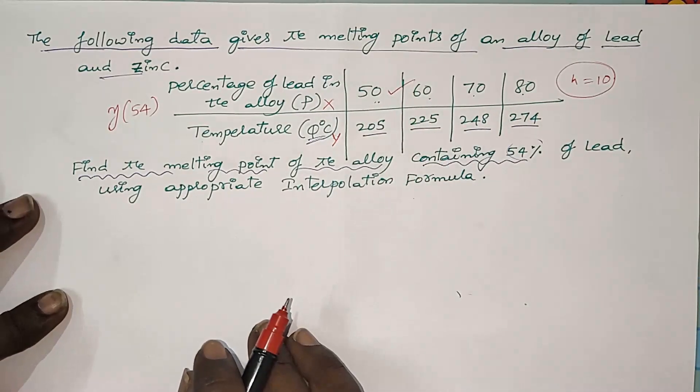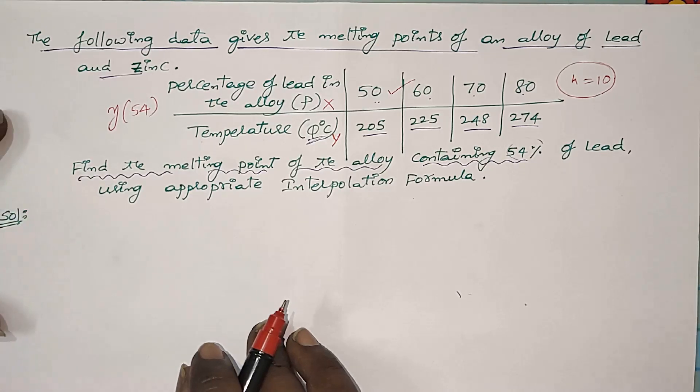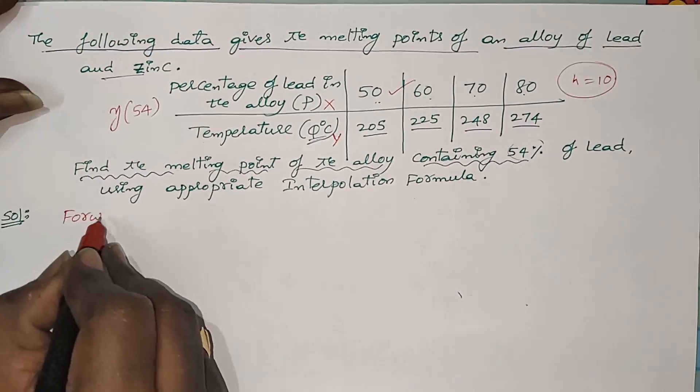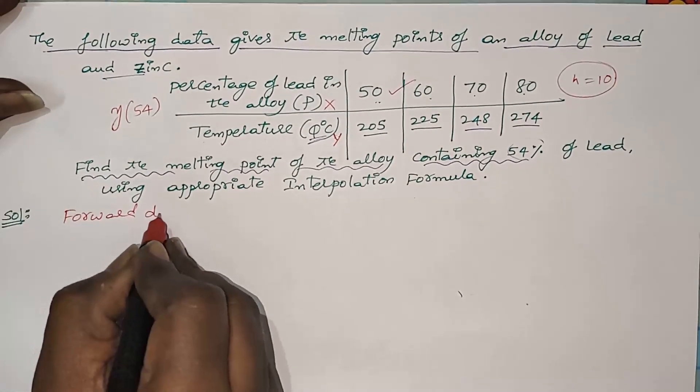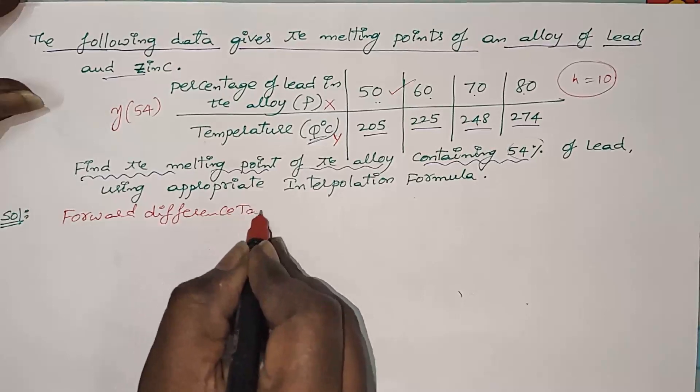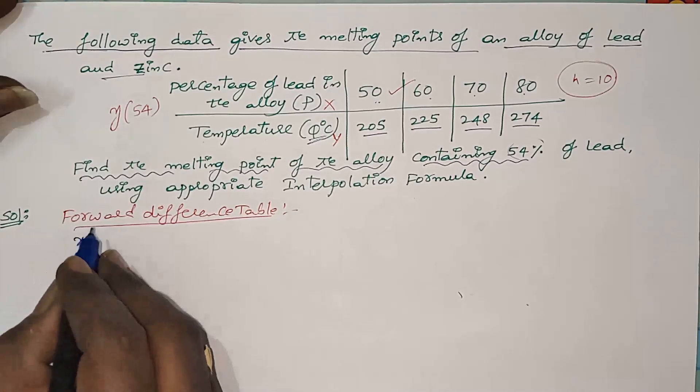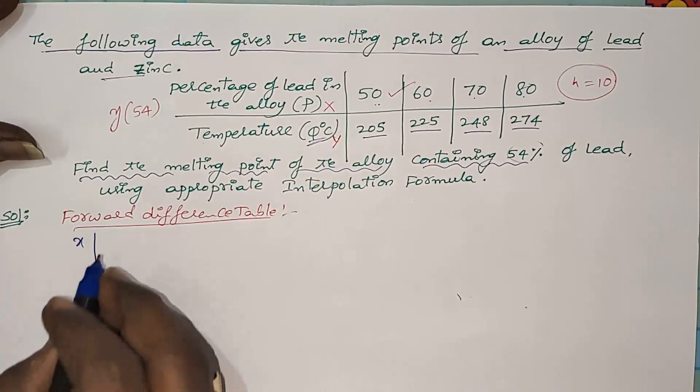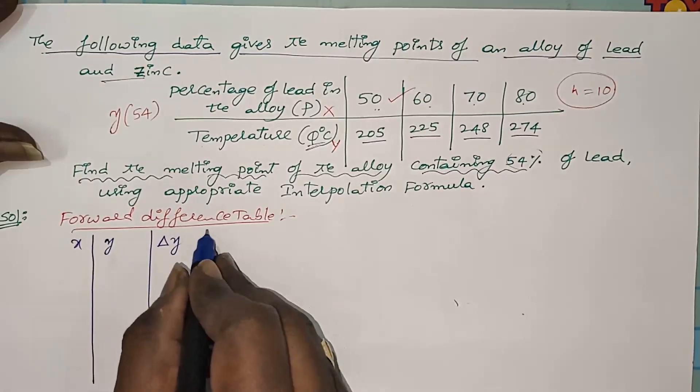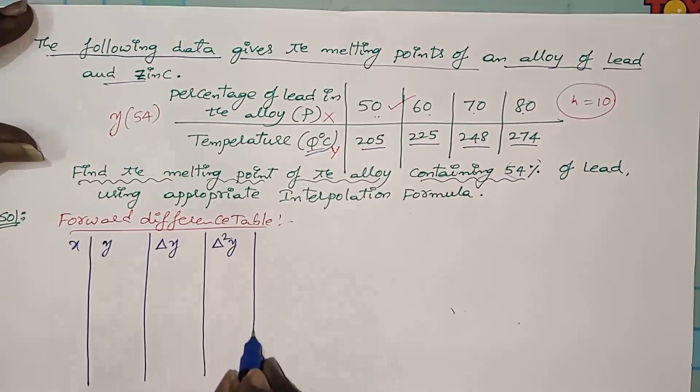First of all, consider the forward difference table. Write the X values and the temperature values, first order forward difference, second order, and third order.